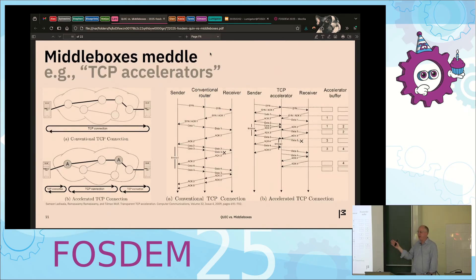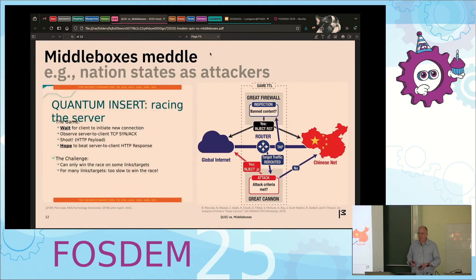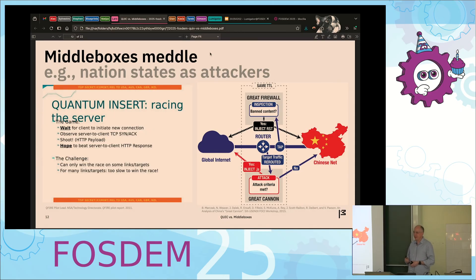Middleboxes meddle in good ways: TCP accelerators for geostationary satellites make those work by lying to end systems about what the path looks like — great but also terrible, because they do really bad things to traffic. But there's also quantum insert, the NSA full-take, the Great Firewall. There's a great paper on the Great Canon — China basically weaponizes arbitrary websites by injecting JavaScript through the Great Firewall, turning clients into DDoS machines. Read that paper. These attacks are not great and we want to do something against them.